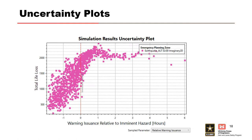Here's an interesting uncertainty plot. Life loss is still on the y-axis, and warning issuance relative to breach time is on the x-axis. The range spans from people receiving the warning six hours after breach out to around two hours before breach. Notice that when we're around two hours before breach, life loss is much lower than if the warning is received an hour or more after breach.